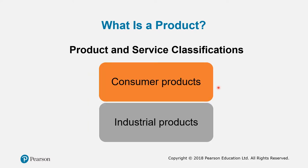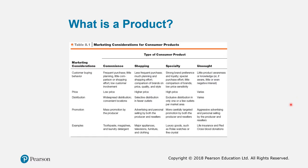There are two broad classifications of products: consumer products and industrial products. There are four types of consumer products: convenience products, shopping products, specialty products, and unsought products. You can examine the marketing considerations for each type — customer buying behavior, pricing, distribution strategy, and promotion strategy.